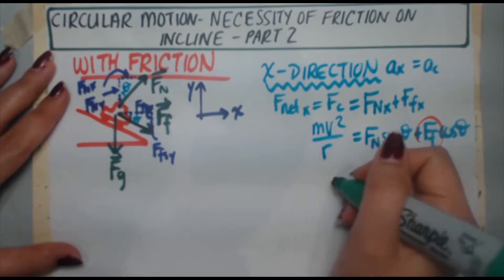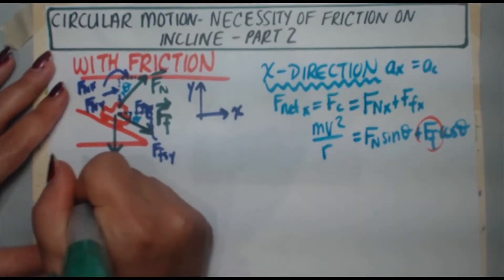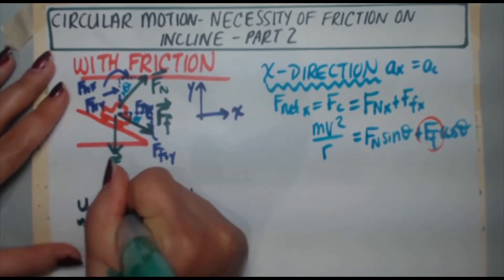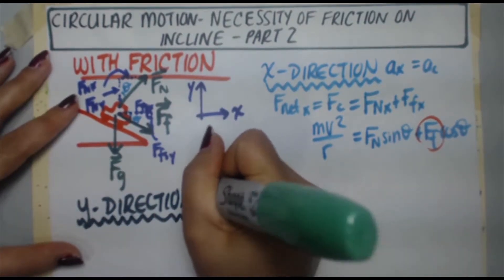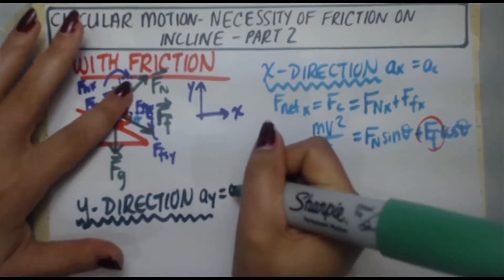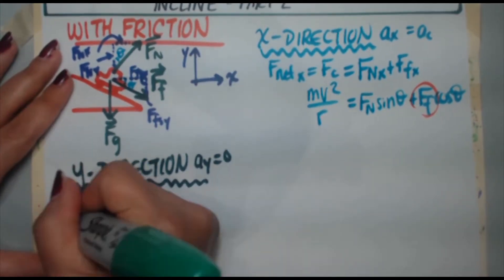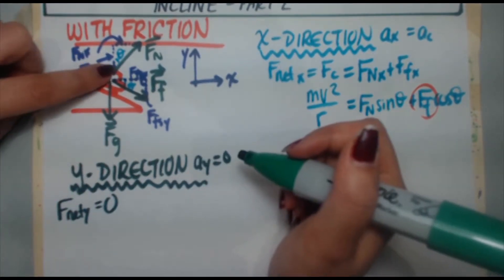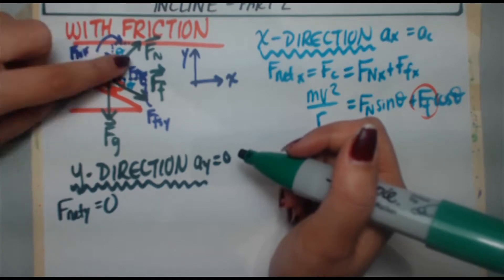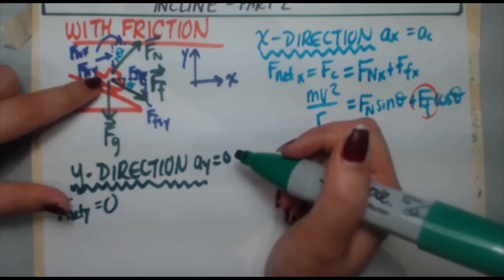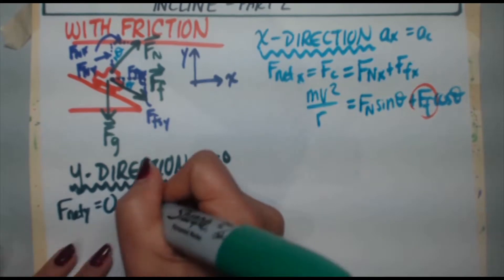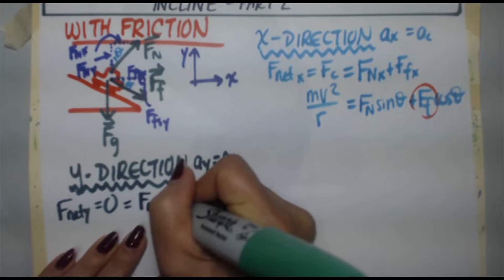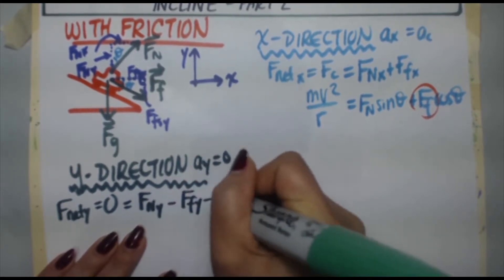In the y direction, let's do that here. In the y direction, acceleration is zero, because the car's not bobbing up and down. Fn y is equal to zero. In the y direction, we've got the normal force going up. We've got friction going down, the y component, and we've got gravity also going down. So this is equal to Fn y minus Ffy minus Fg.